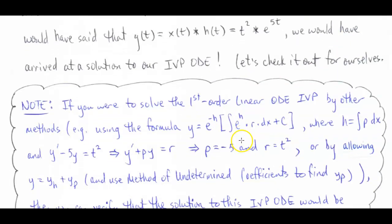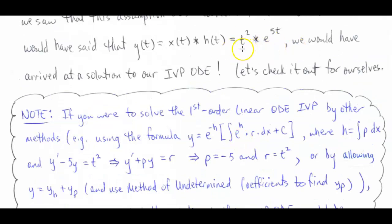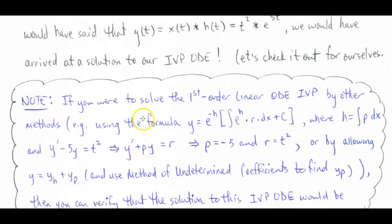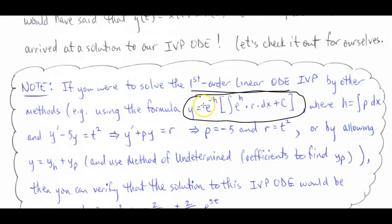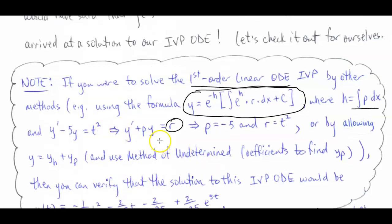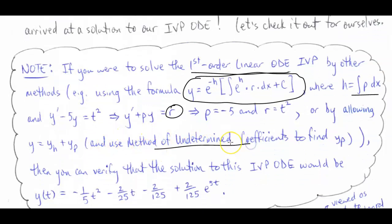Before we get into doing the convolution of t squared and e raised to the 5t, note that I can actually solve the same equation using first order linear methods. Depending on how you solve these equations, you may find the integrating factor and multiply both sides by it. The way I do it is using the formula where h is the integral of p dx and r is whatever function is on the right side of the first order differential equation. We could also solve it by method of undetermined coefficients.